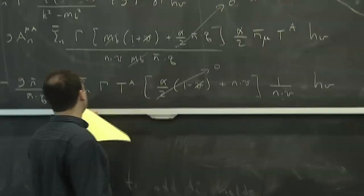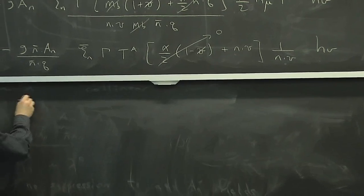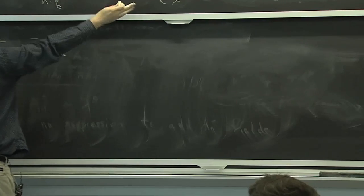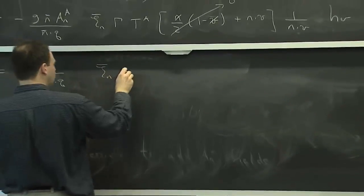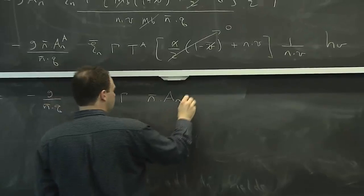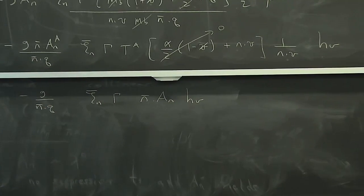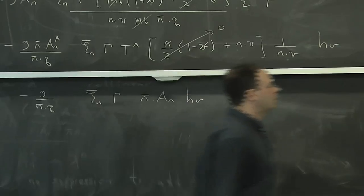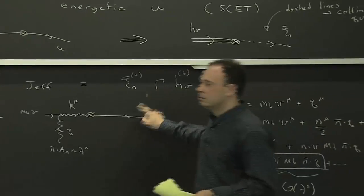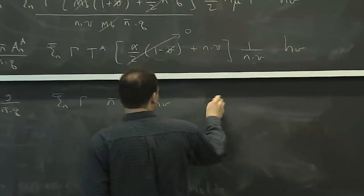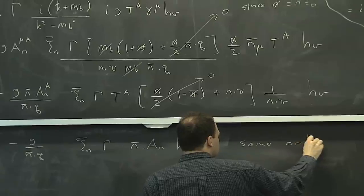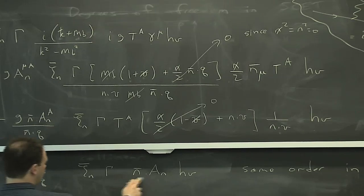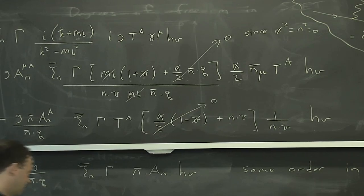There's still a 1 over n dot v here, and then there's an H_V. And 1 minus v-slash on the heavy quark field is zero. So the n dot v cancels the n dot v. If I write this, putting the A^n field inside because the t^a is inside, then I get this operator. The momentum n-bar dot q is order 1, and this n-bar dot A^n is order 1. So this operator is the same size as the leading operator.